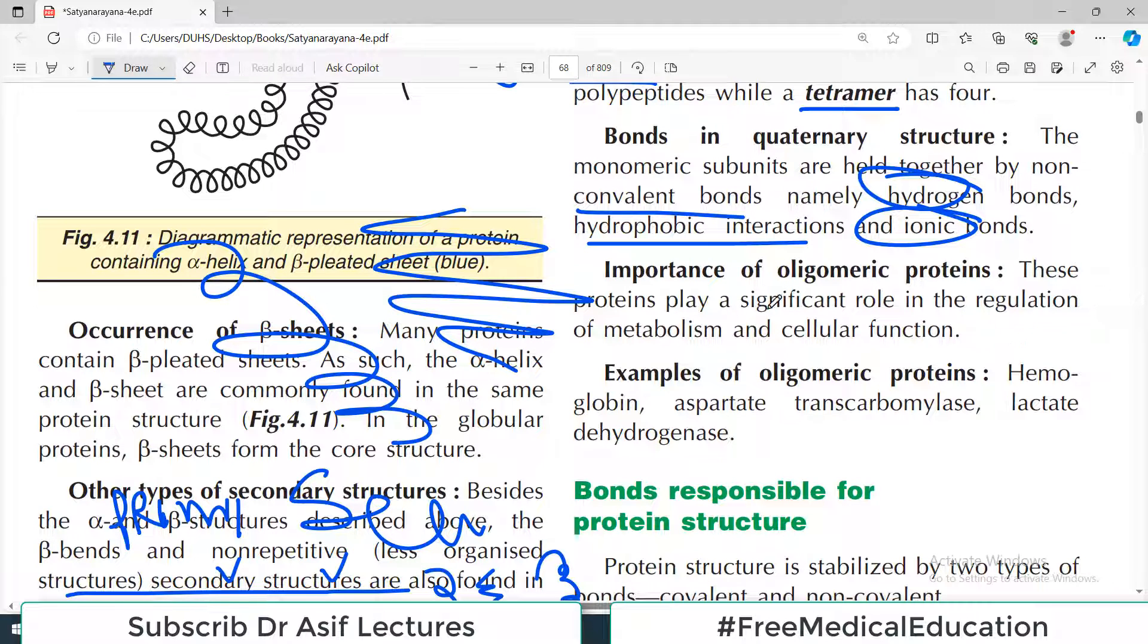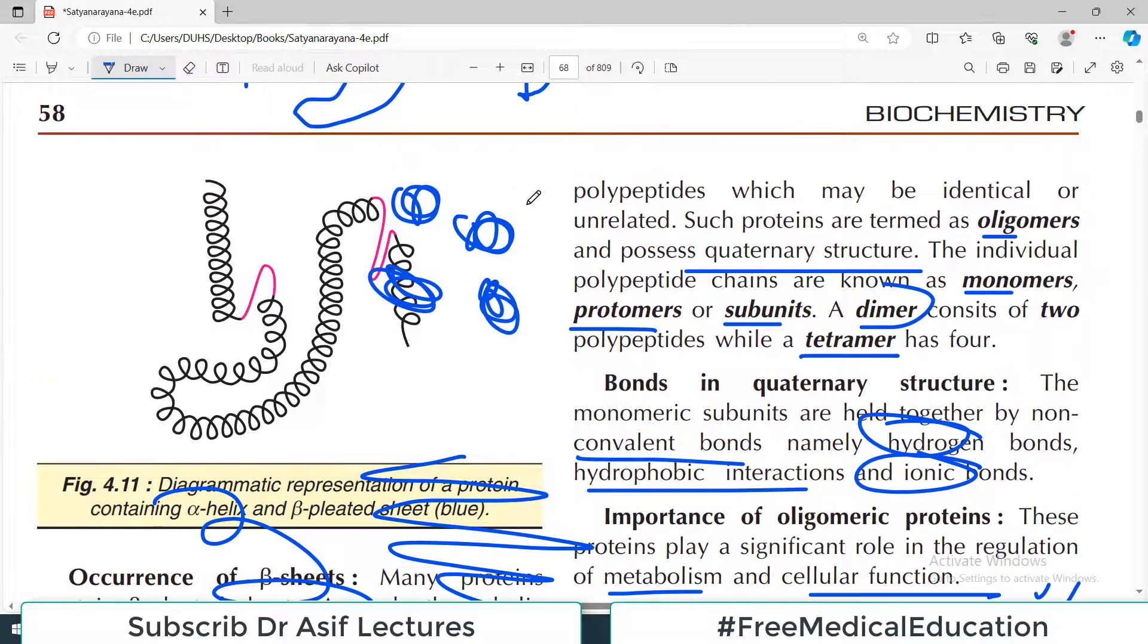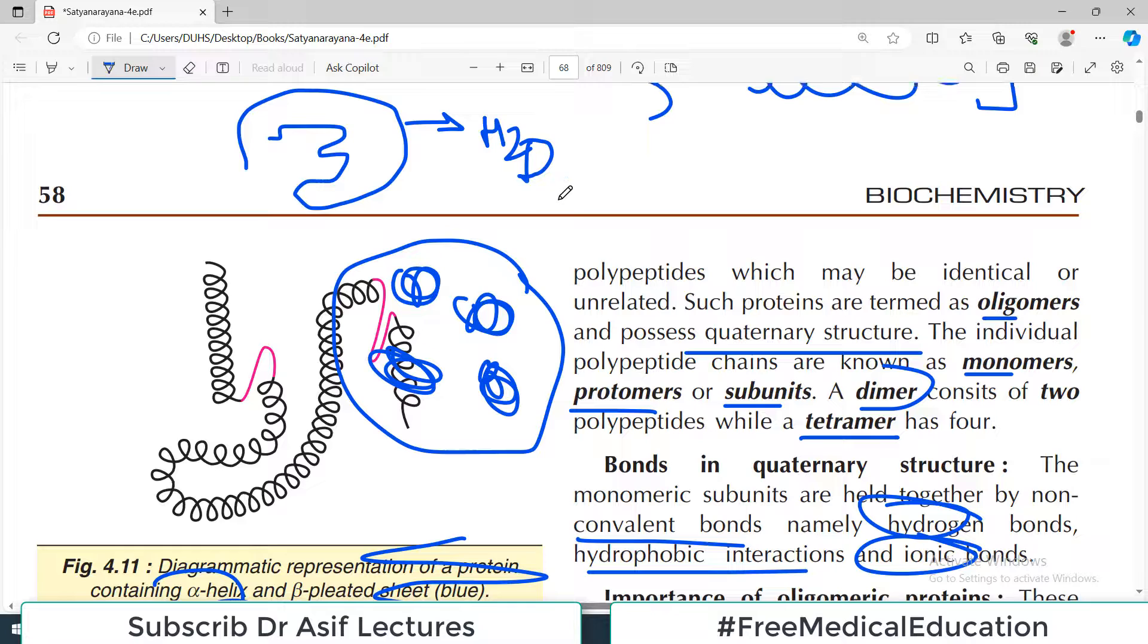Importance of oligomeric proteins: These proteins play a significant role in regulation of metabolism and cellular function. Examples include hemoglobin, aspartate transcarbamoylase, and lactate dehydrogenase. They are either important enzymes or important proteins which carry oxygen.